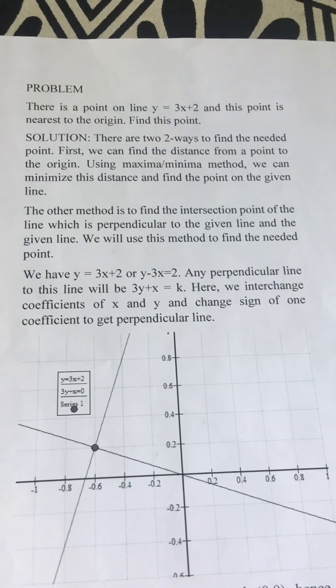We will use this method to find the needed point. We have y = 3x + 2 or y - 3x = 2. Any perpendicular line to this line will be 3y + x = k where k is some constant. Here we interchange coefficients of x and y and change sign of one coefficient to get the perpendicular line.